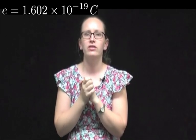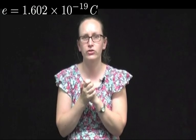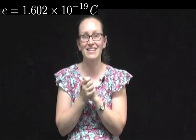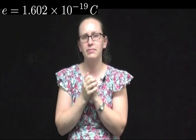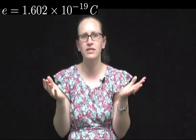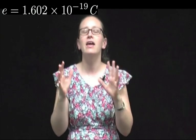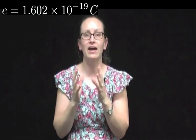Electrons have a very small amount of charge. The charge on an electron is 1.602 times 10 to the minus 19 coulombs, so a very small number. But because there's so many atoms in the matter around us, it's possible to get relatively large charges.